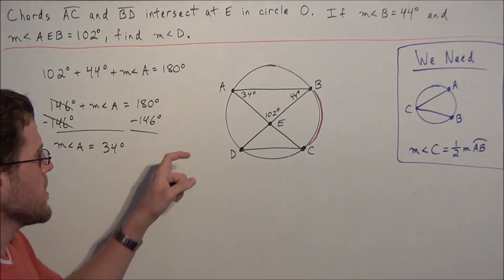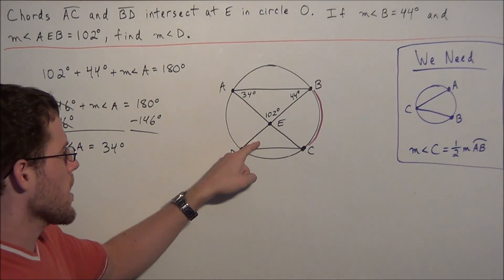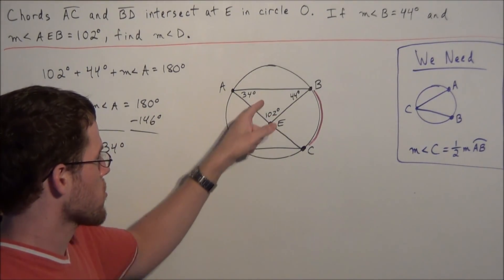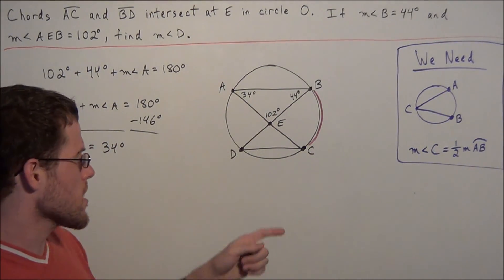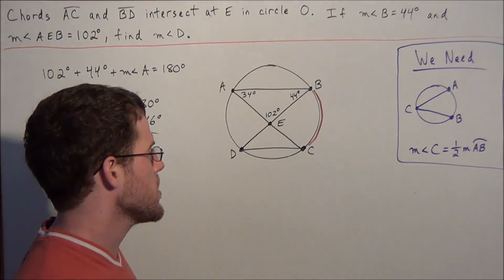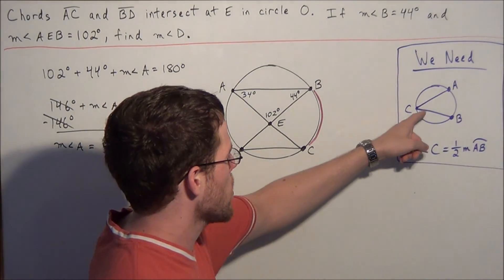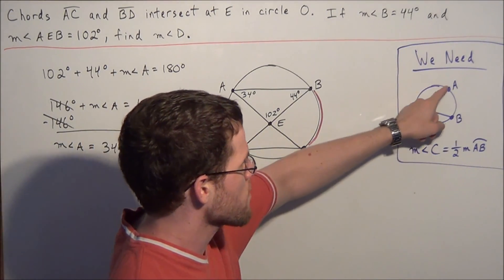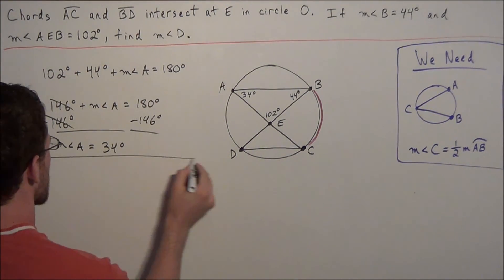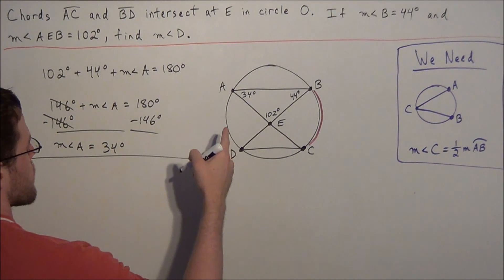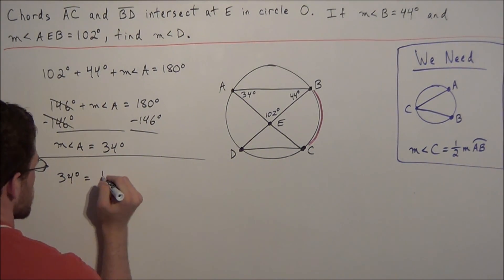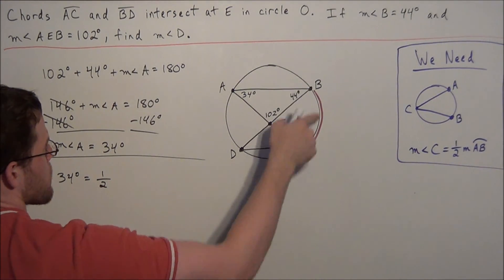We notice right away that angle D and angle A both intercept the same arc, so their measures are equal. But let's say we didn't see that step — we want to find the measure of arc BC. Using the inscribed angle theorem, the measure of an inscribed angle equals one half the measure of the arc it intercepts. So: the measure of angle A, which is 34 degrees, equals one half the measure of arc BC.